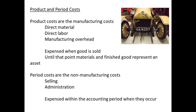Manufacturing costs are also referred to as product costs. This is because the direct labour, materials, and manufacturing overhead are the costs to make the good, and these will be expensed when the goods are sold. Up until that point, the materials, work in progress, and finished goods not sold are assets of the business. The non-manufacturing costs are period costs, and these are expensed in the accounting period in which they occur.